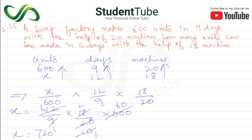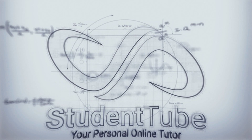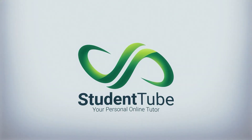X is equal to 720 units — that is, 18 machines working for 12 days will produce 720 units. This was today's questions. I hope you have a good understanding. For more exercises and questions, do subscribe, and also share with your classmates and friends. See you in the next video — Allah Hafiz.